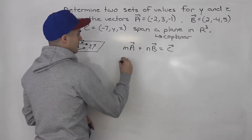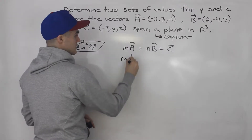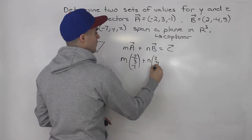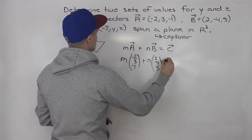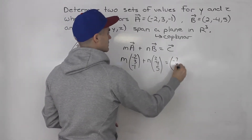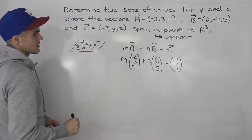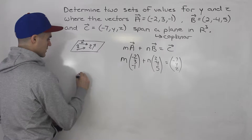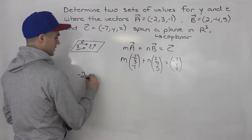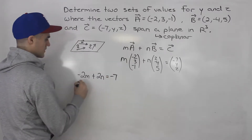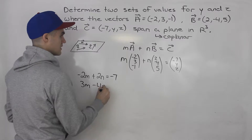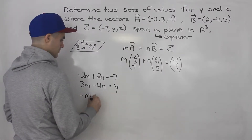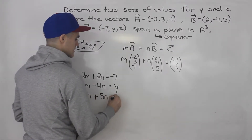So if we bring in the actual components for these vectors: vector a is negative 2, 3, negative 1; vector b is 2, negative 4, and 5; and vector c is negative 7, y, z. We can set up equations here. So negative 2m plus 2n has to equal negative 7. And we get 3m minus 4n has to equal y. And then negative m plus 5n has to equal z.